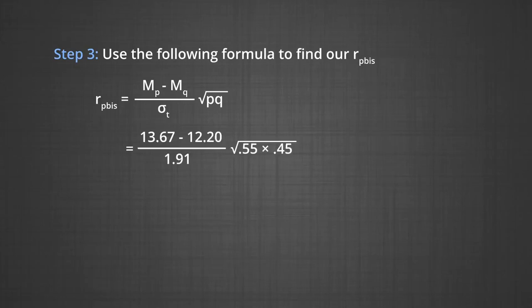Using the formula to find R_pbis: (M_P - M_Q) / (σ_t × √(pq)) = (13.67 - 12.20) / (1.91 × √(0.55 × 0.45)) = 0.38.